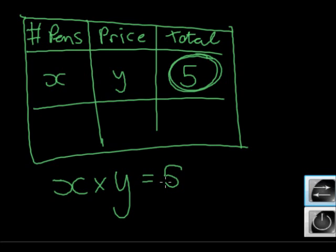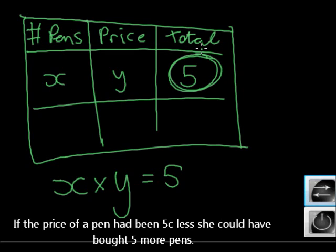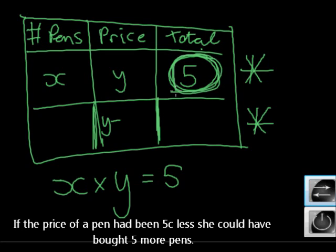Do you agree with me? The number of pens multiplied by the price is the total that she's paid. Now let's see, if the price of the pen had been 5 cents less, so now this was one scenario. Here we go to the next scenario. If something else happened, what has changed? The price of the pen. It was 5 cents less, so what will this price be? y minus 5 cents. 5 cents in rands will be 0.05.